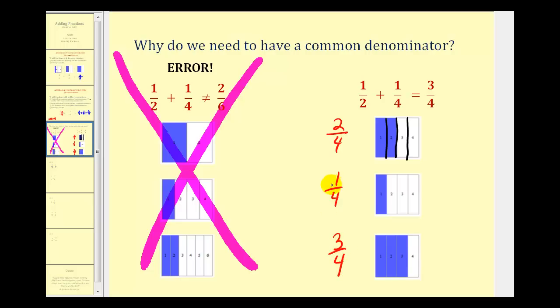So when we obtain the least common denominator, what we're doing is actually dividing the fractions into equal size pieces. Let's take a look at a few more examples.